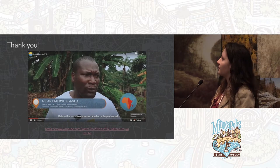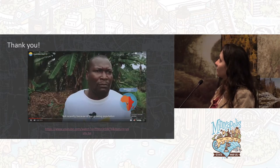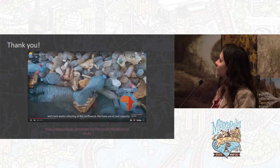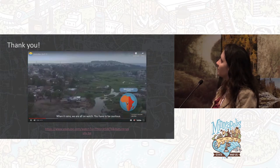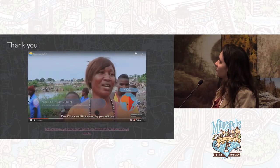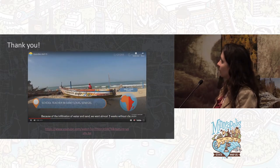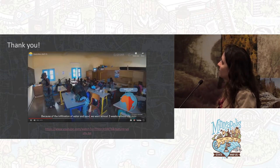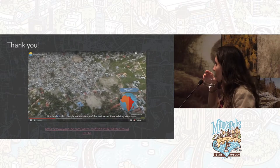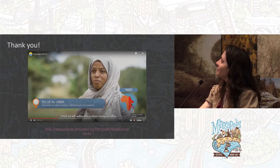Before, these two rivers you see had large sections that could contain the water without problems. But nowadays, with population growth and the waste situation in the drainage channels, these two rivers are saturated with waste. When it rains, we are on alert — we must be careful, we must get up, even if it rains at three in the morning, we cannot sleep. We stayed because for three weeks it stopped. There are conflicts — people are not aware of the hazards that exist. With this open map system, we think we will reduce these problems facing our office.